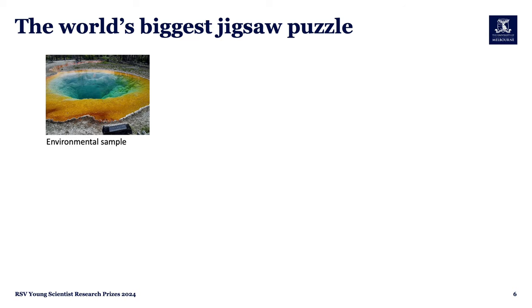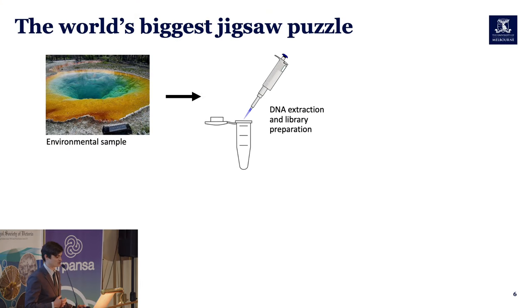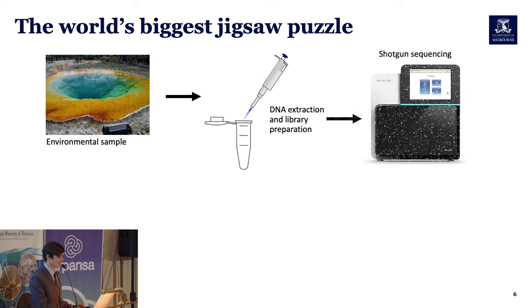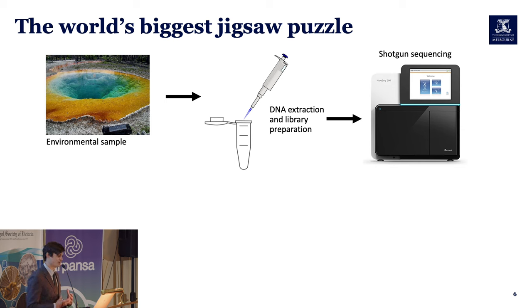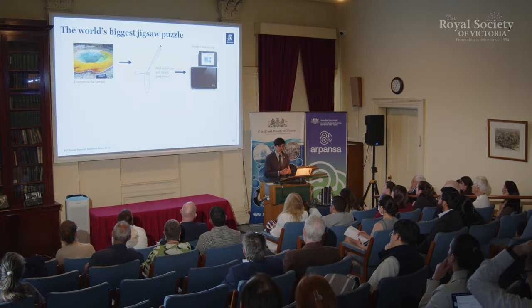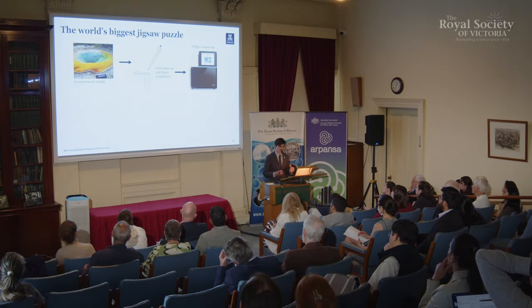Imagine trying to solve the world's biggest jigsaw puzzle, where the pieces represent millions of DNA fragments and we are trying to reassemble them into the genomes of the microbes present in the environment. The first step in metagenomics is collecting an environmental sample — whether from seawater, sediments, or any other marine environment. We then extract the DNA from all organisms in that sample and perform shotgun sequencing, a method that sequences random fragments of DNA — hence the jigsaw puzzle analogy — capturing the genetic diversity of the entire microbial community.